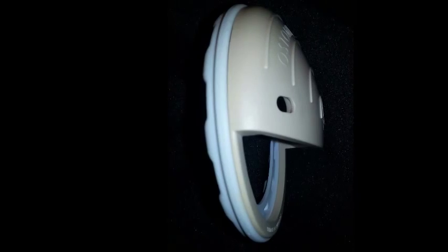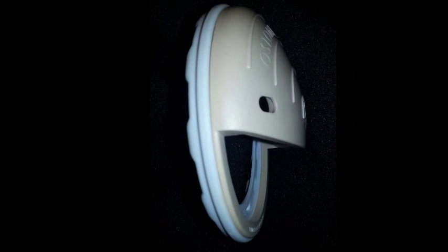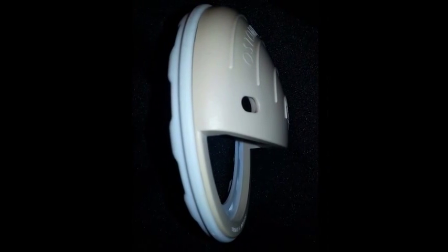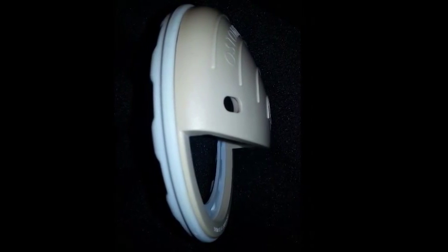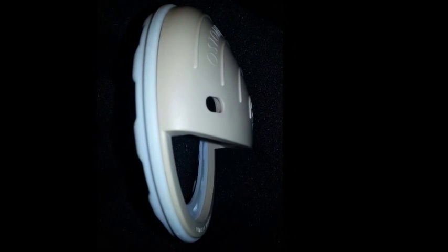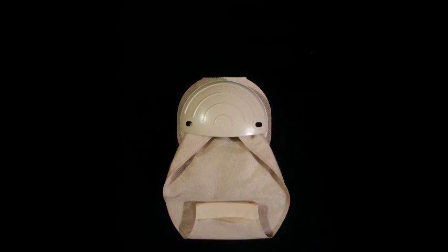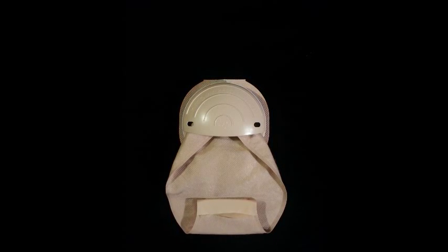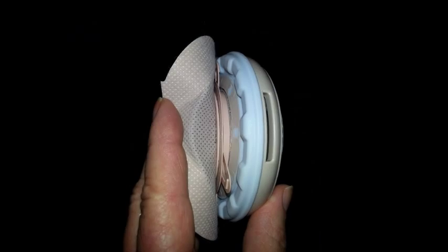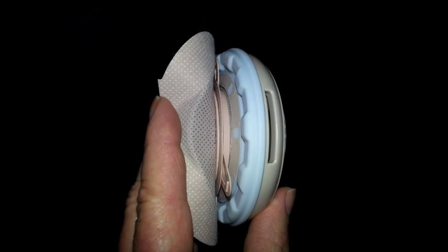The short cup protects your stoma while allowing flow, even while sitting, and offers protection from waistbands and inadvertent bumps while restricting gas from ballooning the pouch above the waistline. A vent at the top is for filtered pouches.